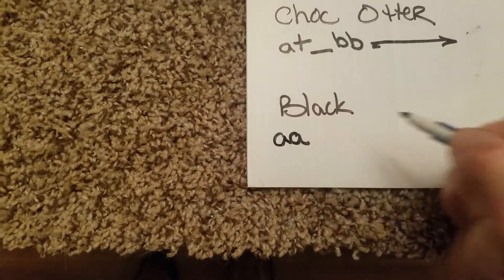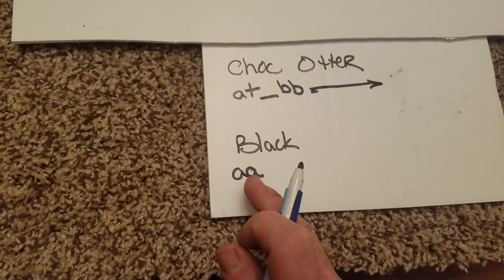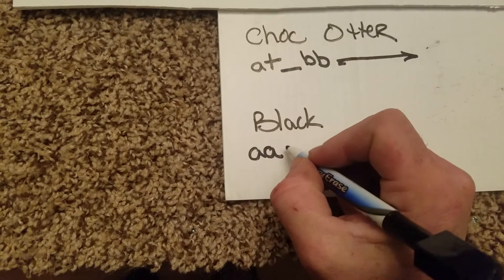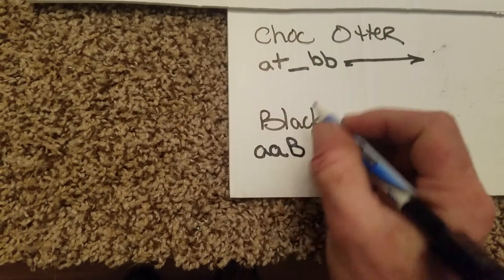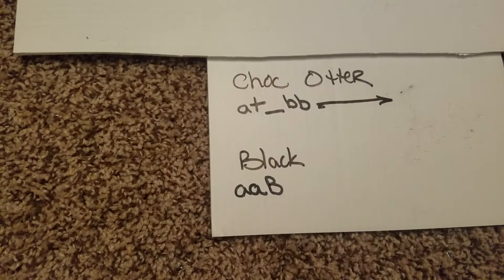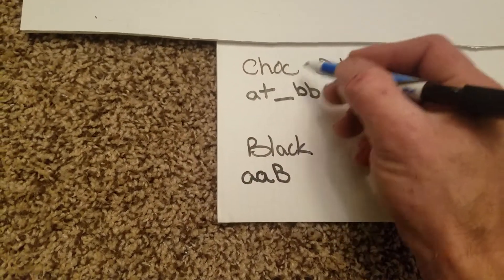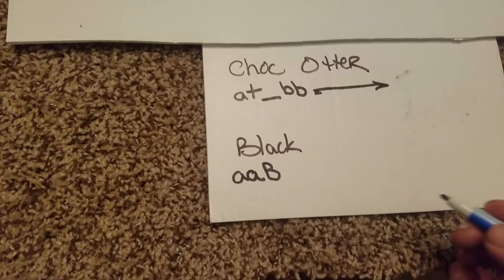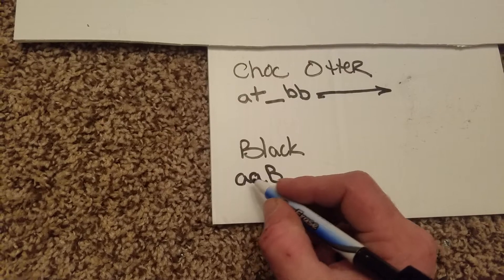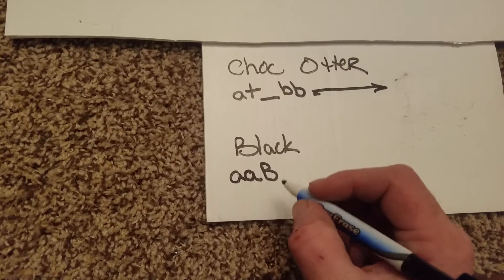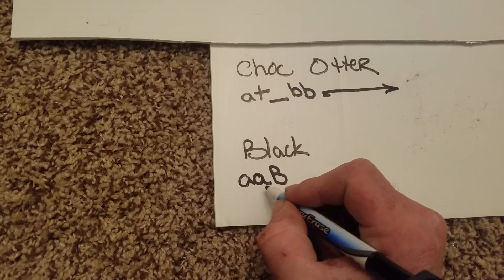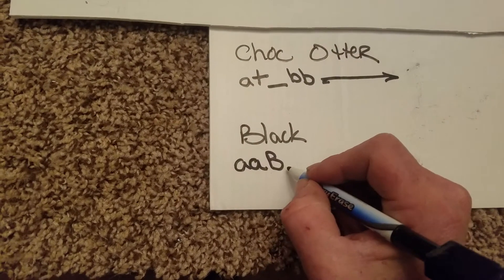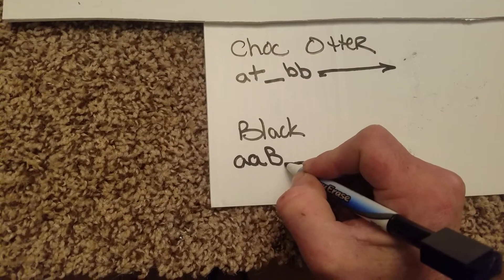For the black rabbit, black is a self-based rabbit — a self pattern. We're going to write lowercase a, lowercase a, because there's nothing more recessive than self. Then we go to black: capital B. We don't use an underscore there, because the underscore represents what we don't know — it's sort of like a question mark. Since we know the second gene has to be self, we write lowercase a, lowercase a. Then capital B for black.